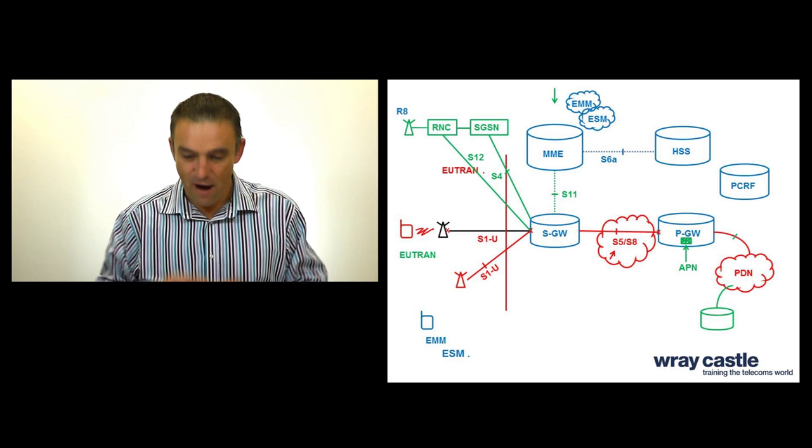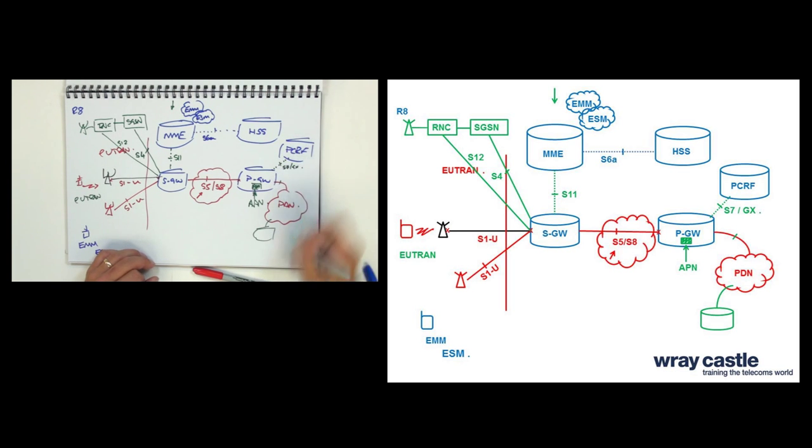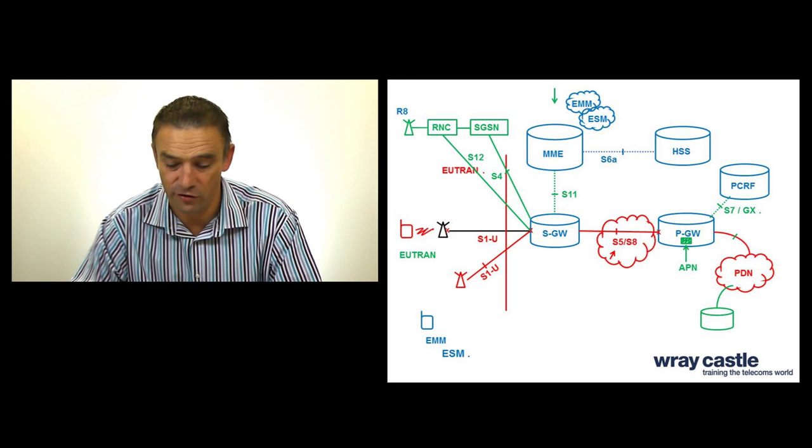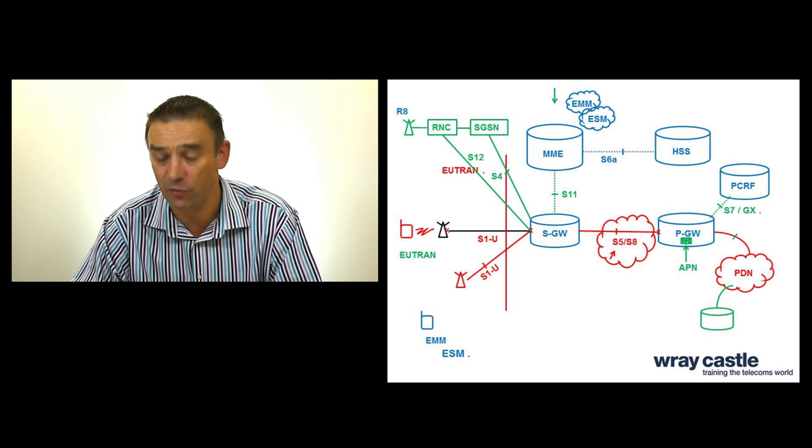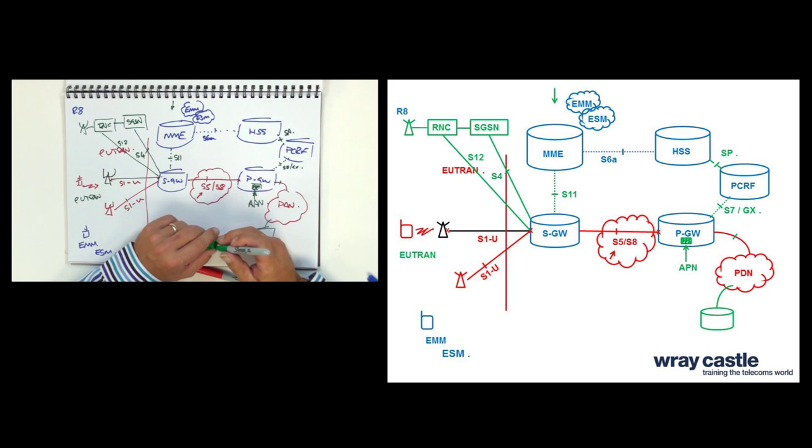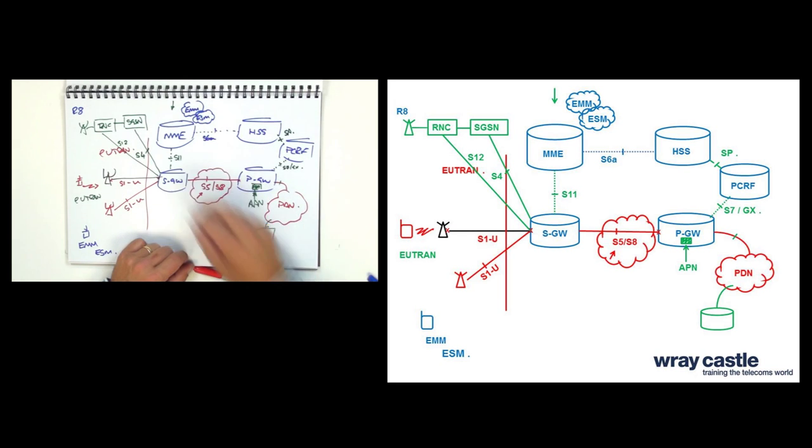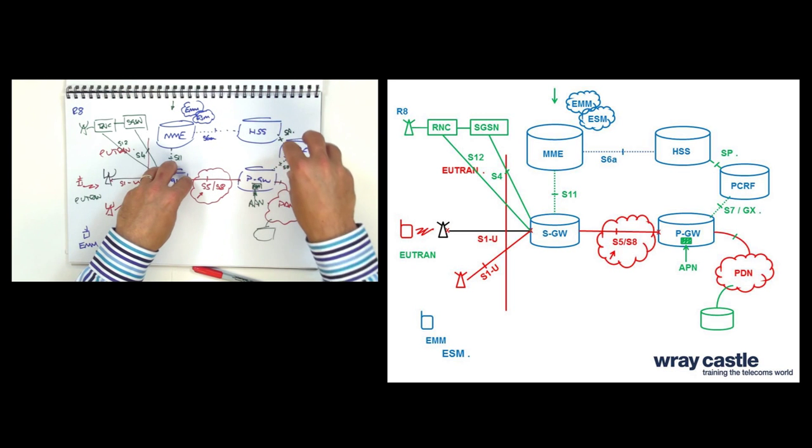And really the final node that we have in here is the PCRF, the policy and charging resource function. The interface here is S7 slash GX. And again, that really is there to manage policy to authorize quality of service for subscribers. And you'll probably get that information via the SP interface from the HSS. So just five functions within the core network: mobility management entity, serving gateway, PDN gateway, HSS, and PCRF.